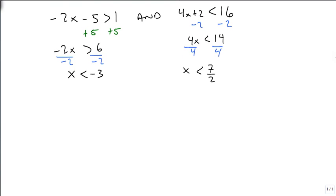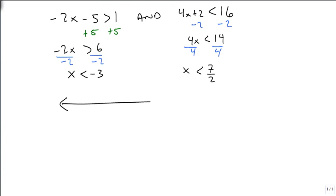And so now what we're going to do is we're going to graph these. The first one starts at negative 3 and goes towards the less than arrow. The second one starts at 7 halves, which is just between 3 and 4, and also goes towards the negative arrow. What I want to know is, what region has both shaded? So that's my answer.